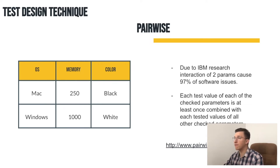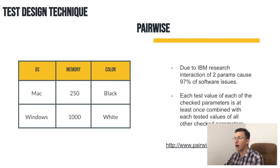About the definition: Pairwise is the technique when each test value of each of the checked parameters is at least once combined with each tested value of all the other checked parameters. To understand this, focus your attention on the table from the left side of the screen.